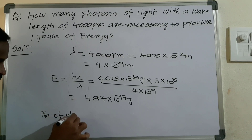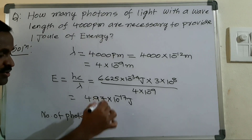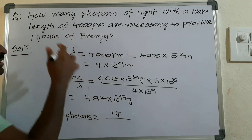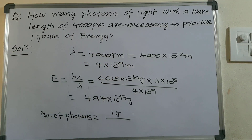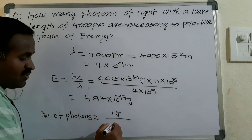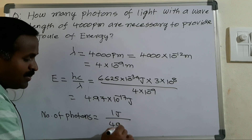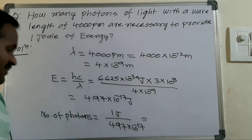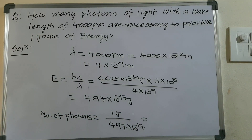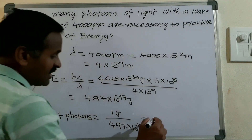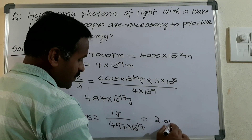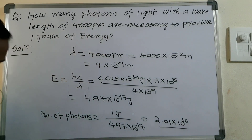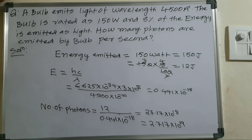The number of photons equals total energy divided by energy per photon. One joule divided by 4.97 into 10 power minus 17, and after simplification you will get the answer as 2.01 into 10 power 16 photons.